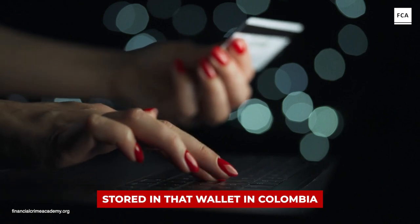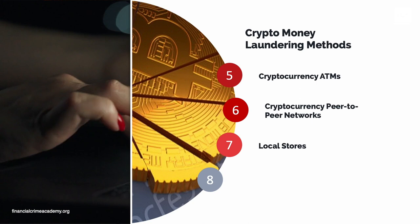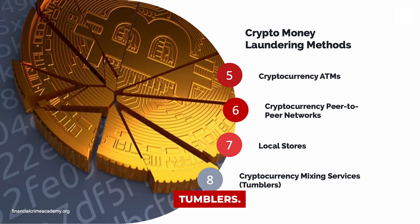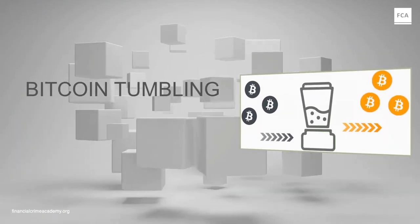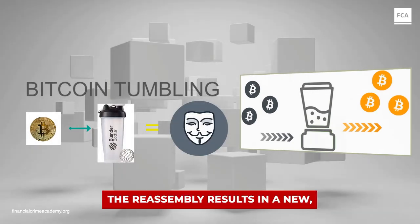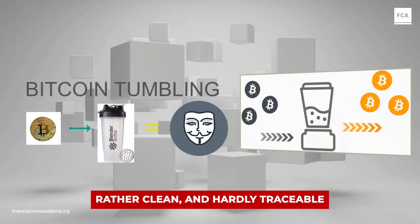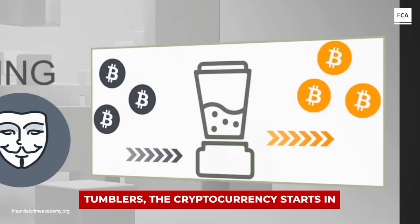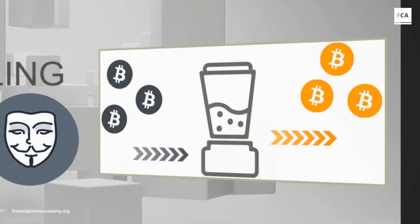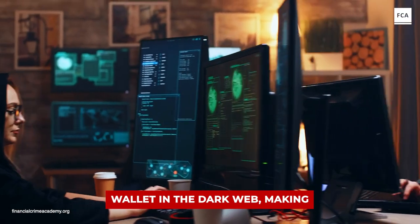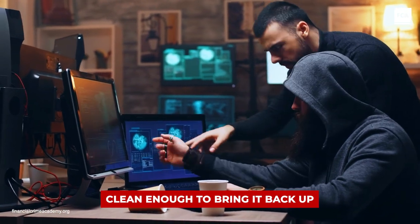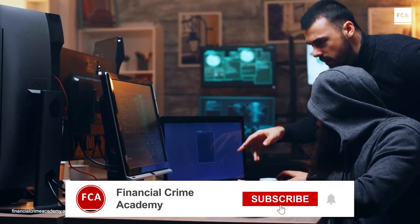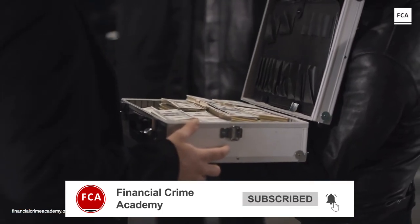Method 8: Cryptocurrency Mixing Services — Tumblers. The last cryptocurrency money laundering method involves mixing services, known as tumblers. Tumblers split up the dirty cryptocurrency, send it through various addresses, and then recombine it. The reassembly results in a new, rather clean, and hardly traceable amount of cryptocurrency. In most laundering cases involving tumblers, the cryptocurrency starts in a legitimate wallet on the white net, is then transferred to a wallet in the dark web, making multiple hops before landing in a second dark web wallet. At this point, the currency is clean enough to bring it back to the white net and trade it on a legitimate cryptocurrency exchange or sell it for fiat currency such as euro, dollar, or pound.